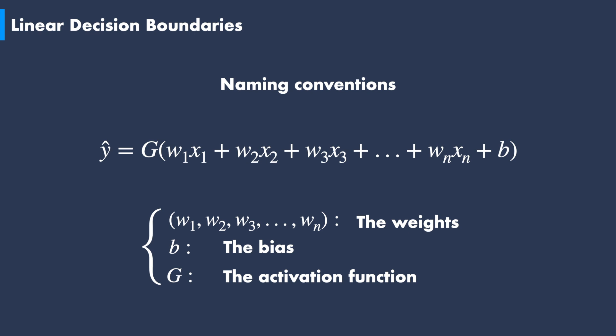b is known as the bias. In the case of a linear equation, the bias is the intercept of the line, but more on the reason of this naming in later videos.